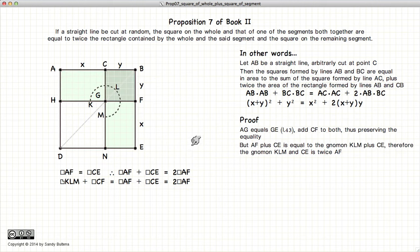But now if we look at our KLM, KLM is AF plus ME. So if we take AF plus ME plus another CF, it is equal to twice AF.